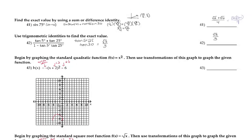For the sum and difference identities, remember the patterns. Sine of (A plus or minus B) is sine cosine plus or minus cosine sine — positive/negative stays the same. Cosine of (A plus or minus B) is cosine cosine minus or plus sine sine — positive/negative changes. For number 41, sine of 75 degrees can be written as sine(30 plus 45): sine 30 cosine 45 plus cosine 45 sine 30. Simplified, this becomes root 2 times (root 3 plus 1) over 4. For number 42, tangent, add 5 and 25 to get 30 — tangent of 30 is root 3 over 3.